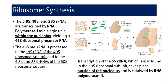The transcription of 5S rRNA, which is also found in the 60S ribosomal subunit and is common to both prokaryotes and eukaryotes, takes place outside the nucleolus. This is a very important MCQ point: the synthesis of 5S rRNA takes place outside the nucleolus and is catalyzed by RNA polymerase 3, while the rest of the rRNAs are synthesized by RNA polymerase 1 within the nucleolus.